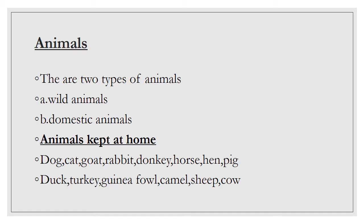Animals are living things. They can die and they eat. We have two types of animals: we have wild animals and domestic animals.